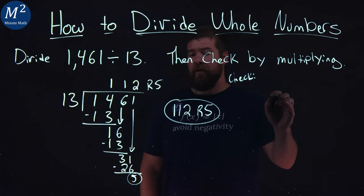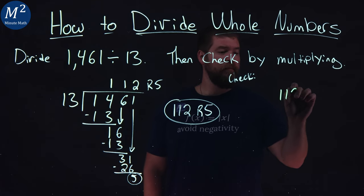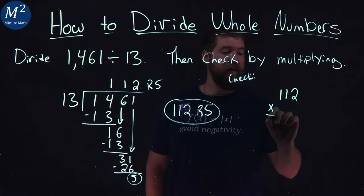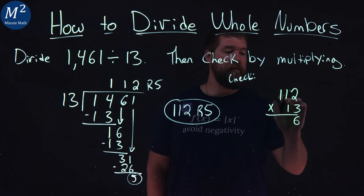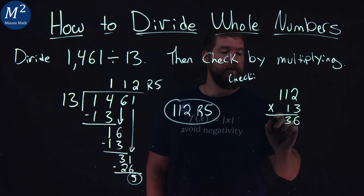So, I'm going to take 112. That's a better marker. And multiply that by 13. 3 times 2 is 6. 3 times 1 is 3. And 3 times 1 is 3.